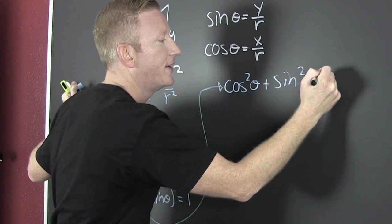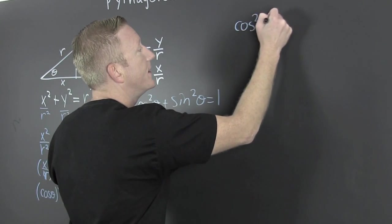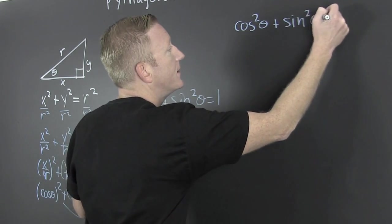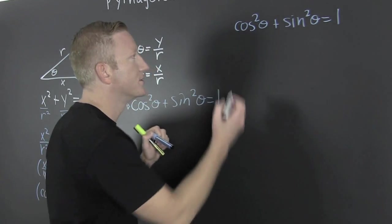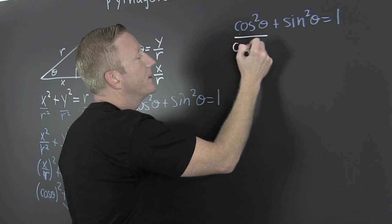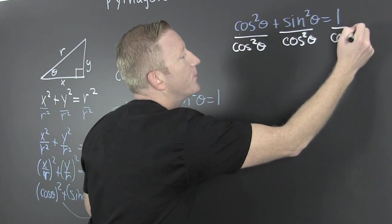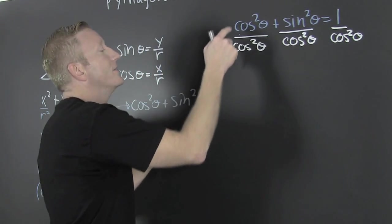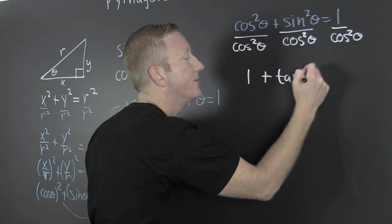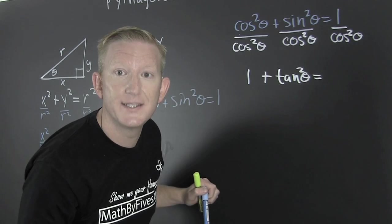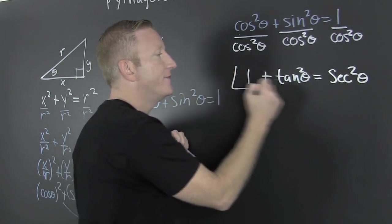Starting from cos²θ + sin²θ = 1, now let's divide everything by cos²θ. Dividing each term by cos²θ gives: cos²θ/cos²θ = 1, plus sine over cosine is tangent, so tan²θ, equals 1 over cosine which is secant, so sec²θ. That gives us 1 + tan²θ = sec²θ — the second Pythagorean identity.